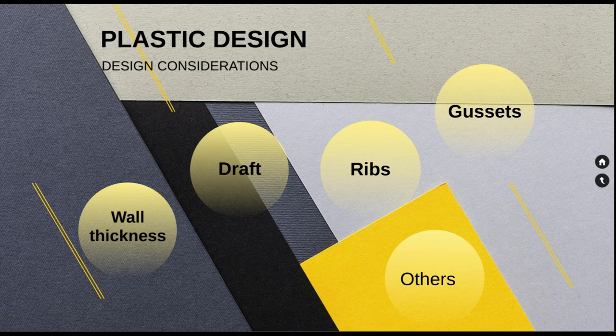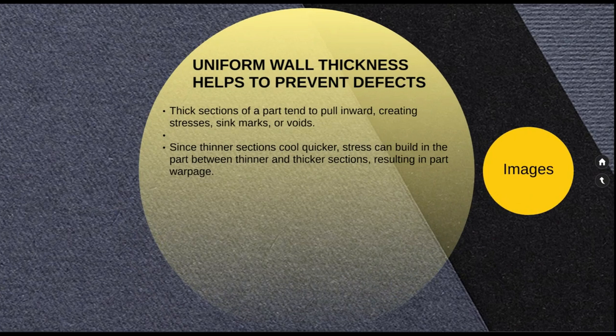The first one is uniform wall thickness. Maintaining uniform wall thickness is important when designing a plastic component because differences in wall thickness cause different cooling in different areas, causing shrinkage and warpage during the molding process. The thick sections of the part warp inward, creating stresses, sink marks, or voids, and thinner sections cause stress that can build up between the thinner and thicker sections, resulting in part warpage.